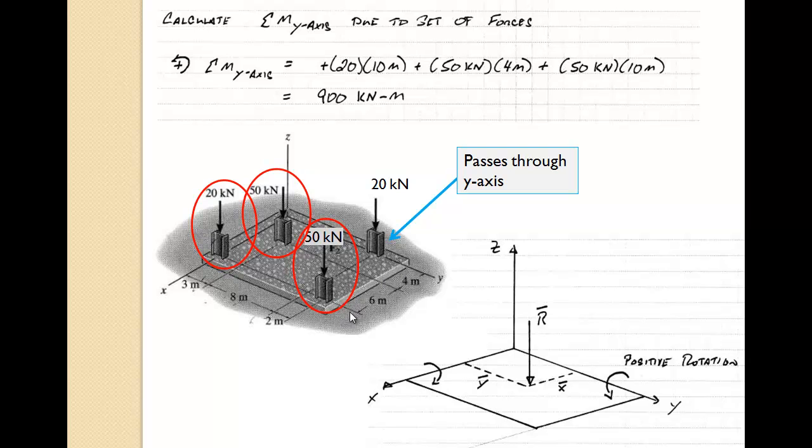This 50 kilonewton load is also at a distance of 10 meters, and this last 50 kilonewton load is at a distance of 4 meters. So we have 20 times 10 plus 50 times 4 plus 50 times 10 for a total moment about the y-axis of 900 kilonewton meters.